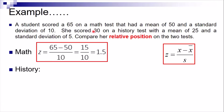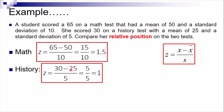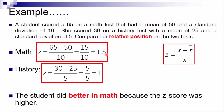For history, x is 30, the mean is 25, and the standard deviation is 5. So we have 30 minus 25, which is 5, divided by 5, giving us a z-score of 1. Comparing the two, since math has a greater z-score of 1.5 versus 1, she did better in math than in history. As z-scores get higher, the better the performance.